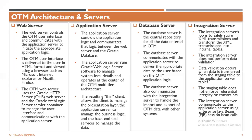The integration server's job is to safely store XML transmissions and transform XML transmissions into internal tables. OTM generally understands XML language. Whatever you send into OTM from any external system — if that external system cannot generate XML format, you need to place a middleware between OTM and that external system. If the external system sends data in JSON format, the middleware converts that JSON into XML based on the XML structure provided by OTM, and that middleware hits the OTM integration server to load information into OTM.